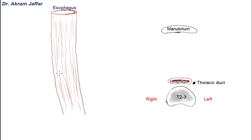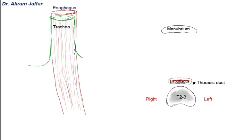The next structure located in front of the esophagus is the trachea. The trachea lies in front of the upper part of the esophagus. As it descends, it inclines a little bit to the right — we will see why in a moment — and it bifurcates into right and left main bronchi.